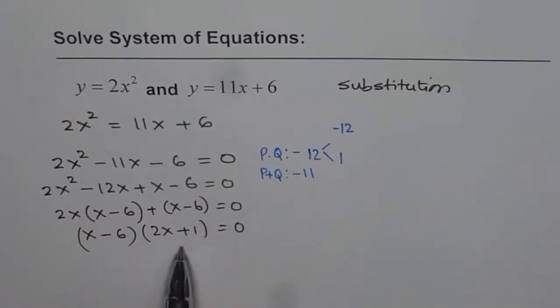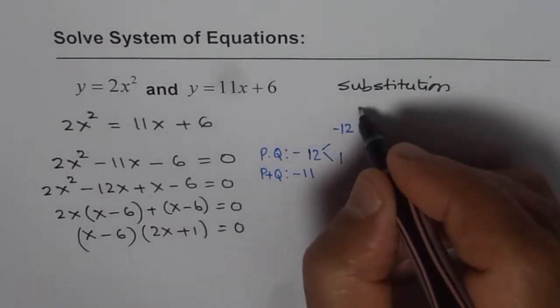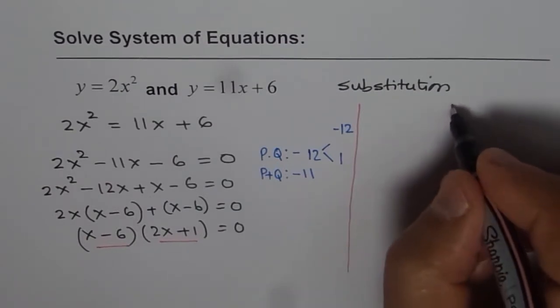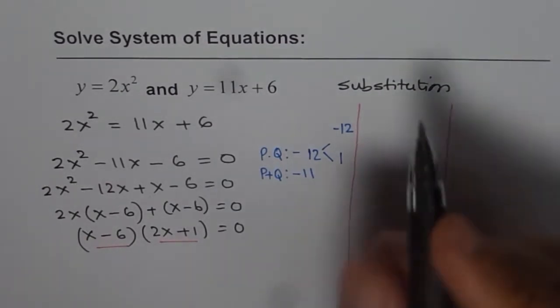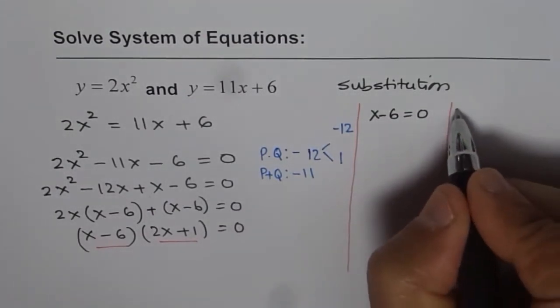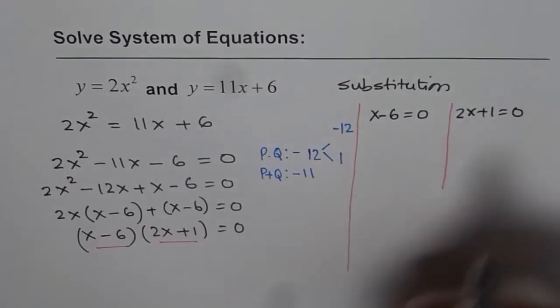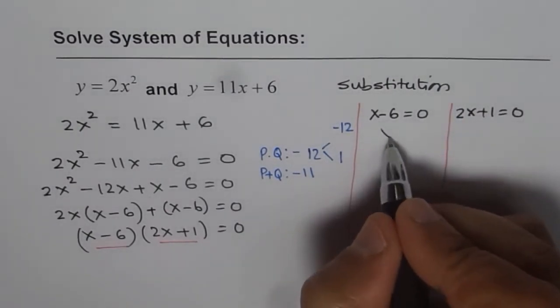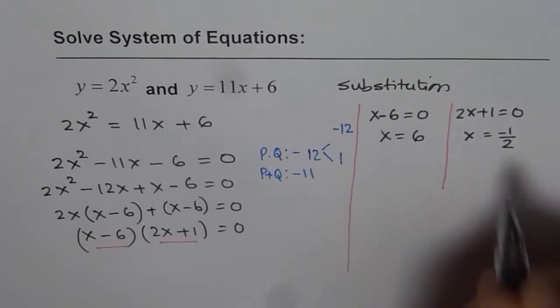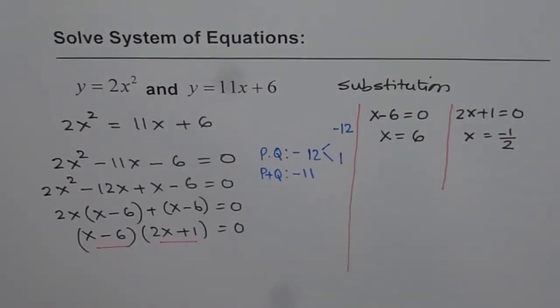Now that gives us two different solutions. So one of the solution here is when x minus 6 is 0. The other is when 2x plus 1 is 0. So we have two different solutions. These two solutions are one when x minus 6 equals to 0. The other one when 2x plus 1 equals to 0. You can solve for x. Here you get x equals to 6. And in this case we get x equals to minus 1 divided by 2. So these are the two solutions for the given system.